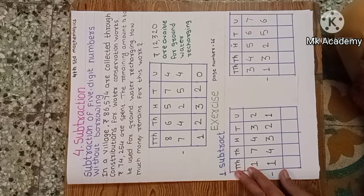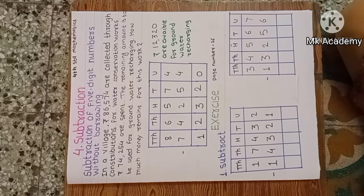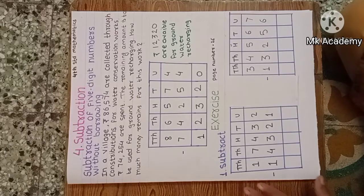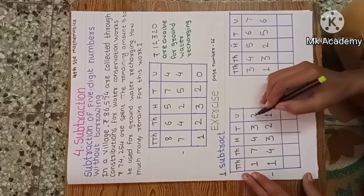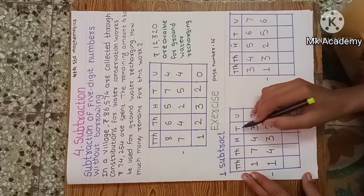Now we solve exercises on subtraction of five-digit numbers without borrowing. First example: 17,432 minus 14,321. Start from the unit place — 2 minus 1, we get 1. Now tens: 3 minus 2, we get 1.